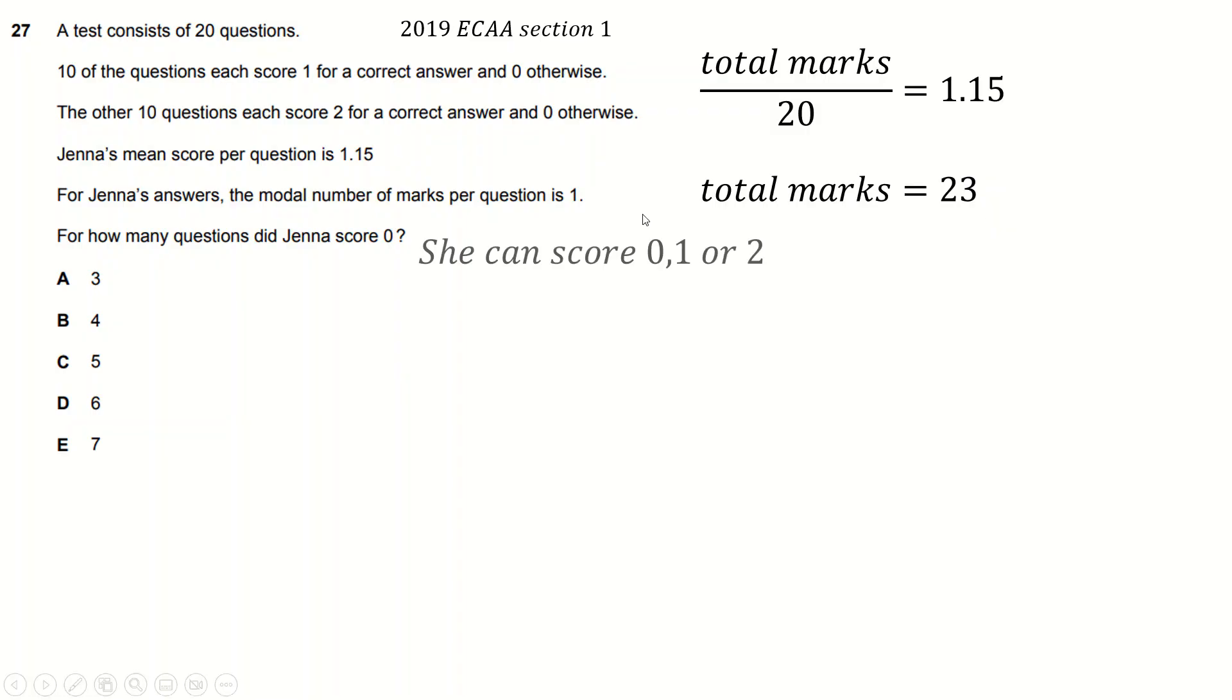She can only score 0, 1, or 2 on a thing, and we know that the most number she gets is 1. This is the one that happens the most often. So what if she just scored 1 ten times? Well, if she did that, she'd have 10 marks from those, and she'd need another 13 from these, which she can't get because they come in batches of 2.